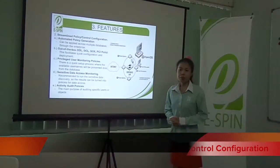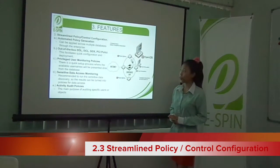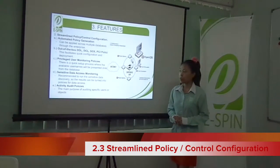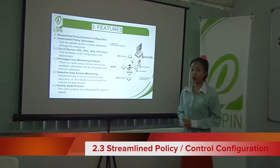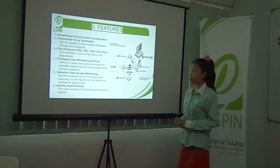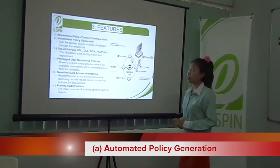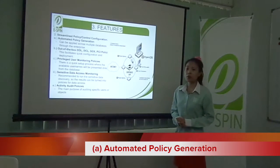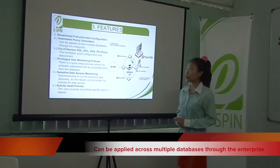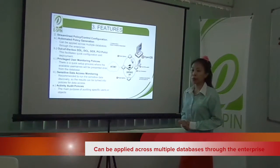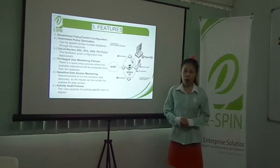Profiling — the result can be used to configure policies more accurately to identify suspicious access patterns. Second is Streamline Policy Control Configuration. There are five things we have to know.